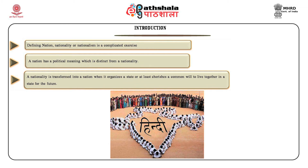Balibar further writes that the term fiction should not be taken in the sense of a pure and simple illusion without historical effect. As he contends, no nation possesses an ethnic base naturally, but as social formations are nationalized, the populations included within them are represented in the past or in the future as if they form a national community possessing of itself an identity of origins, culture and interest which transcends individuals and social conditions. According to social anthropologist and political philosopher Ernest Gellner, nationalism is primarily a political principle which holds that the political and the national units should be congruent. Nations, like states, are a contingency and not a universal necessity. Ethnicity becomes political — it gives rise to nationalism — when the ethnic group is not merely conscious of its own existence but also imbued with the conviction that the ethnic boundary ought also to be a political one.